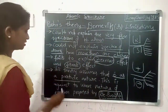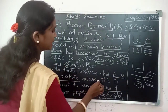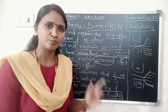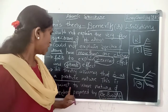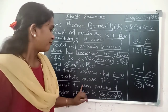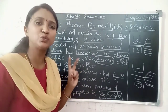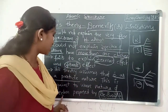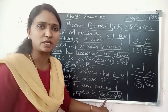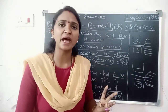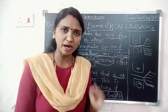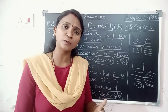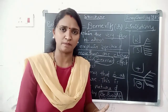The fourth demerit is that this theory assumes that the electron has only a particle nature. However, de Broglie proposed that the electron has a dual nature — both particle and wave. Therefore, Bohr's theory is against the wave nature of the electron as proposed by de Broglie.